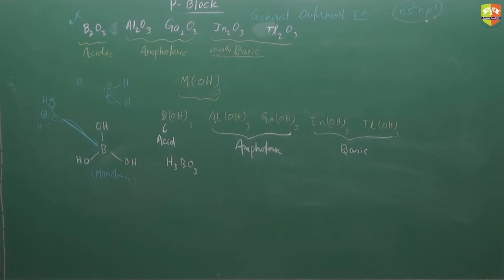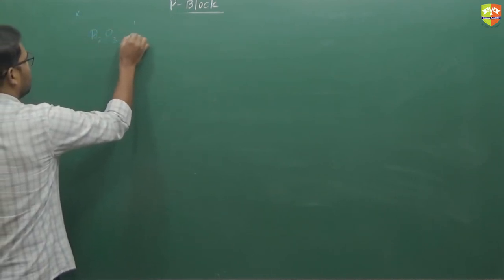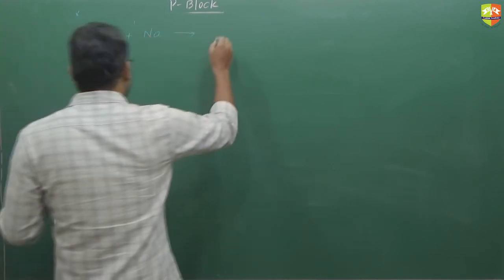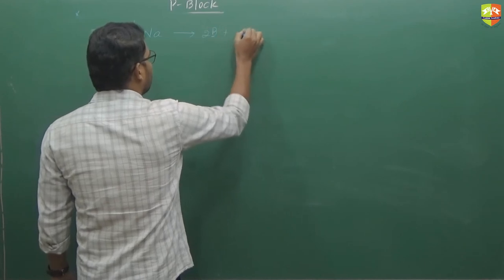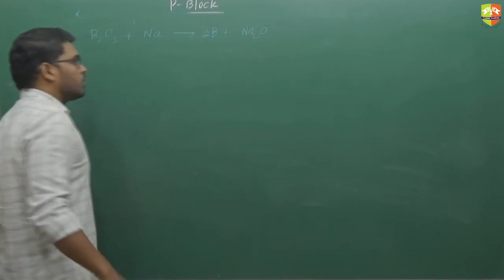Preparation of boron. It is prepared by the reduction of boric anhydride B2O3. Boric anhydride goes under reduction with the metals like sodium, potassium and magnesium.